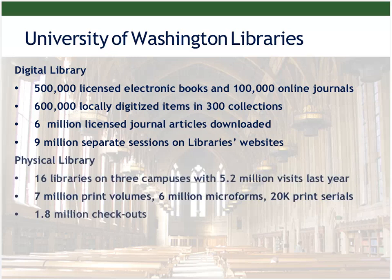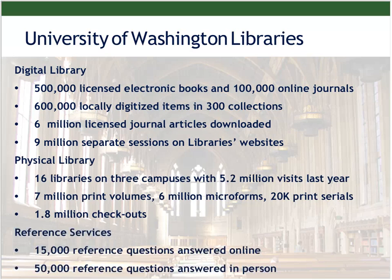The physical library is 16 libraries on three campuses with approximately a little over 5 million visits in the last year. We have 7 million print volumes, 6 million microforms, and about 20,000 print serials. We circulated about 1.8 million items last year. In terms of reference services, we answered 15,000 reference questions online last year, primarily through the use of OCLC's QuestionPoint.